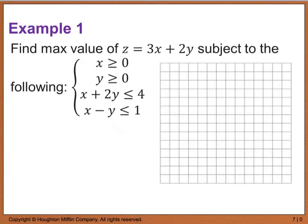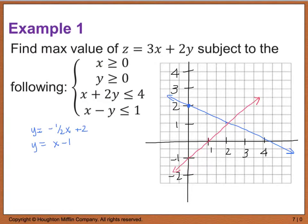Example 1 tells us to find the maximum value of z equals 3x plus 2y, subject to the following constraints. This — z equals 3x plus 2y — is what we call our objective function. Our constraints are the equations given. So we're going to start out by graphing the set of constraints with the inequalities and then find our vertex points. As you can see, this right here is the line of x plus 2y is less than or equal to 4, and all I did is rearrange and put that in the form of y equals mx plus b.